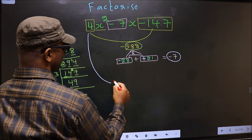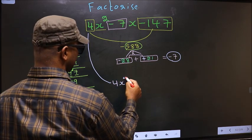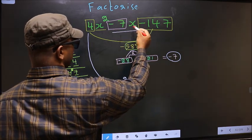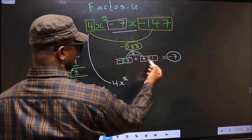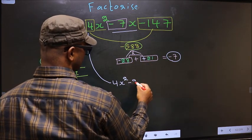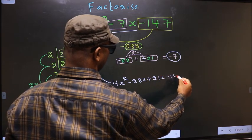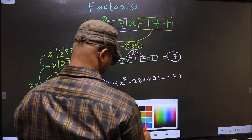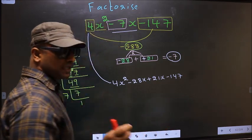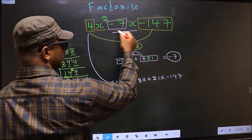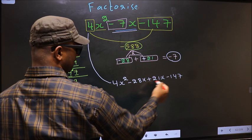Now you change this to 4x². In place of -7x, now we should write this: that is -28x + 21x - 147. Did you understand? In place of -7x we have written this.